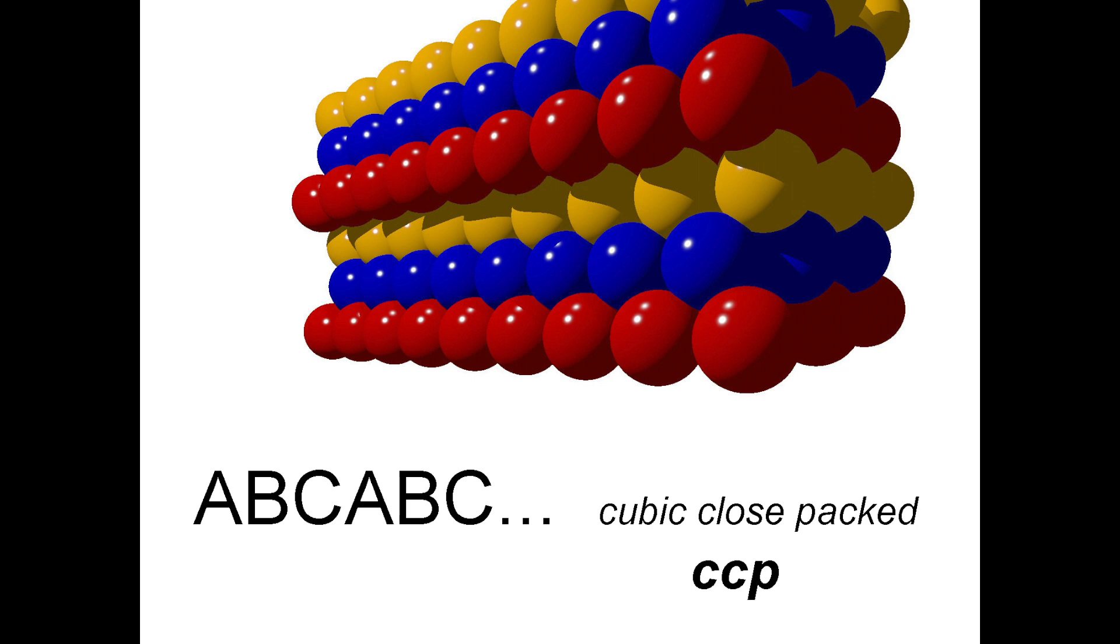Again, in a following video, we'll look at exactly why it is given this label, but for now it is important that you recognize A, B, C, A, B, C structures are called CCP, or cubic close packed.